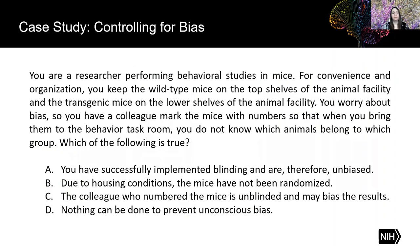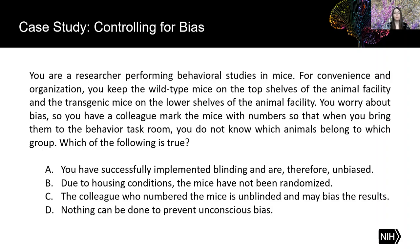Now let's look at a case study. You are a researcher performing behavioral studies in mice. For convenience, you keep the wild type mice on the top shelves of the animal facility and the transgenic mice on the lower shelves. You worry about bias, so you have a colleague mark the mice with numbers so that when you bring them to the behavior task room, you do not know which animals belong to which group. Which of the following is true? A: you have successfully implemented blinding and are therefore unbiased. B: due to housing conditions, the mice have not been randomized. C: the colleague who numbered the mice is unblinded and may bias results. Or D: nothing can be done to prevent unconscious bias.